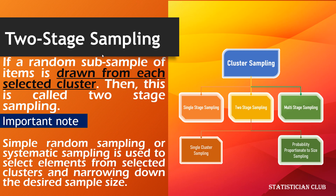Two-stage sampling: if a random subsample of items is drawn from each selected cluster, then this is called two-stage sampling. An important note — simple random sampling or systematic sampling is used to select elements from the selected cluster and narrow down the desired sample size.